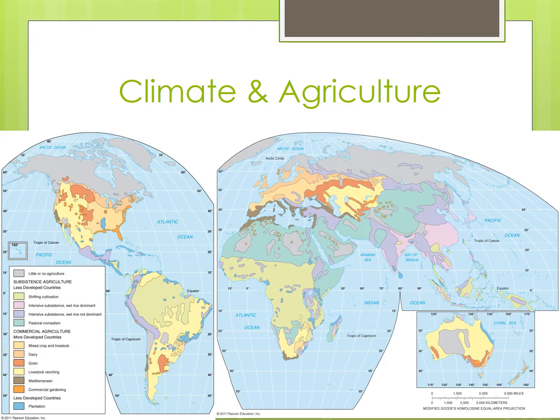As always, be prepared to think like a geographer. Hopefully, you notice that there's a strong correlation between certain types of climate regions on the last map and specific agricultural systems on this one.